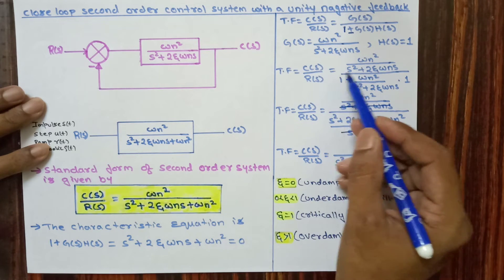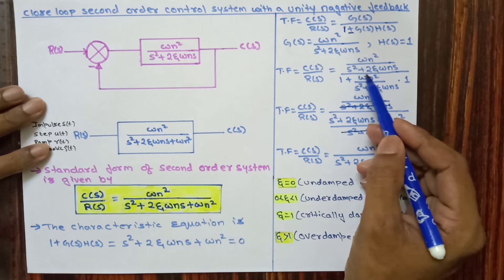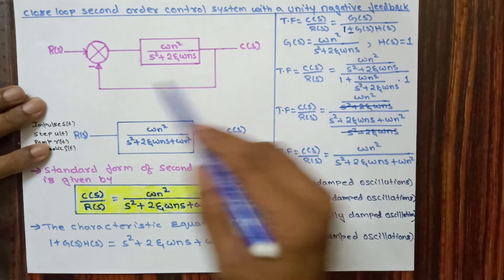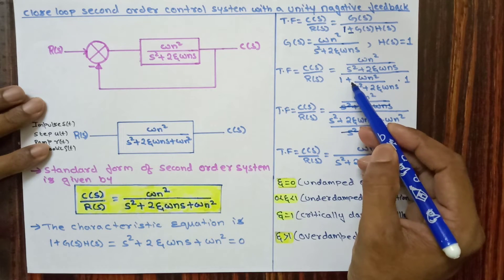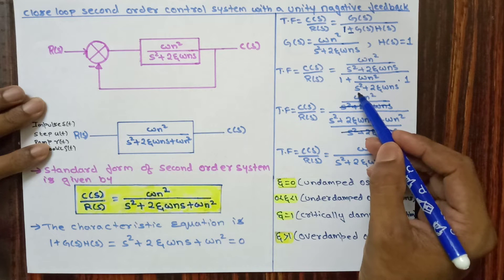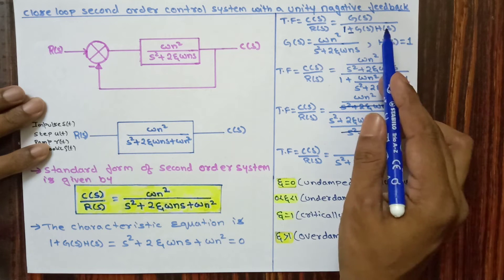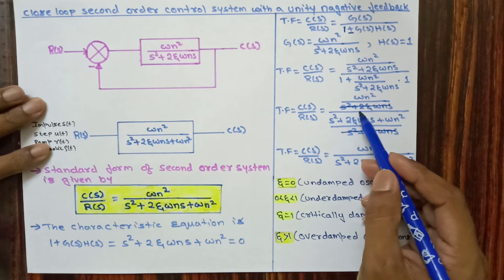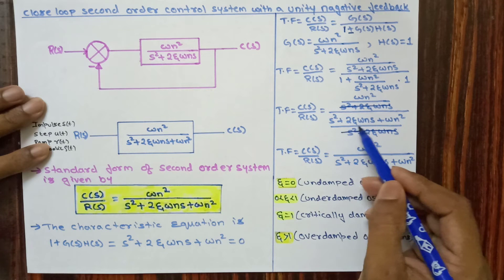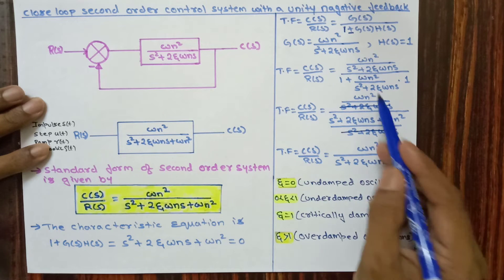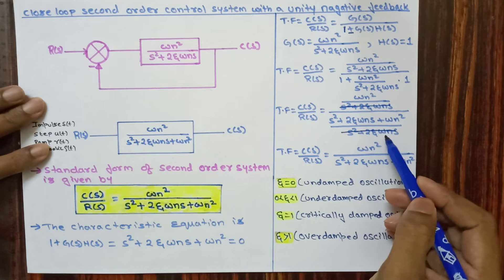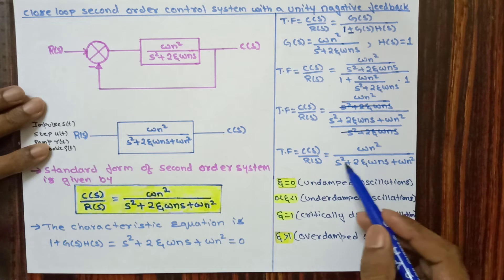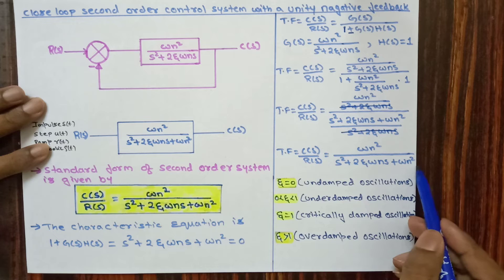Substituting G(s) and H(s) into the closed loop formula, we get C(s)/R(s) = [omega_n squared / (s squared + 2*zeta*omega_n*s)] divided by [1 + omega_n squared / (s squared + 2*zeta*omega_n*s)]. Taking LCM and simplifying by cancelling the common denominator and numerator terms, we finally get the closed loop transfer function: C(s)/R(s) = omega_n squared / (s squared + 2*zeta*omega_n*s + omega_n squared).